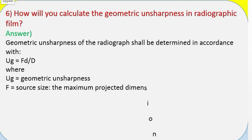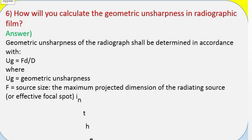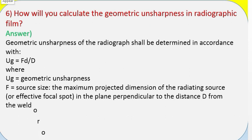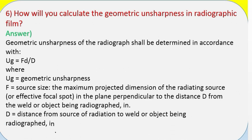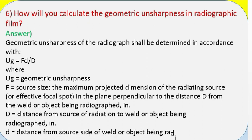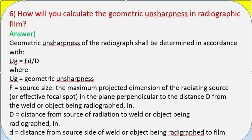Question 6: How will you calculate the geometric unsharpness in a radiographic film? Answer: Geometric unsharpness of the radiograph shall be determined in accordance with Ug = F·d / D, where Ug equals geometric unsharpness; F equals source size — the maximum projected dimension of the radiating source or effective focal spot in the plane perpendicular to the distance D from the weld or object being radiographed; D equals distance from source of radiation to weld or object being radiographed to film.